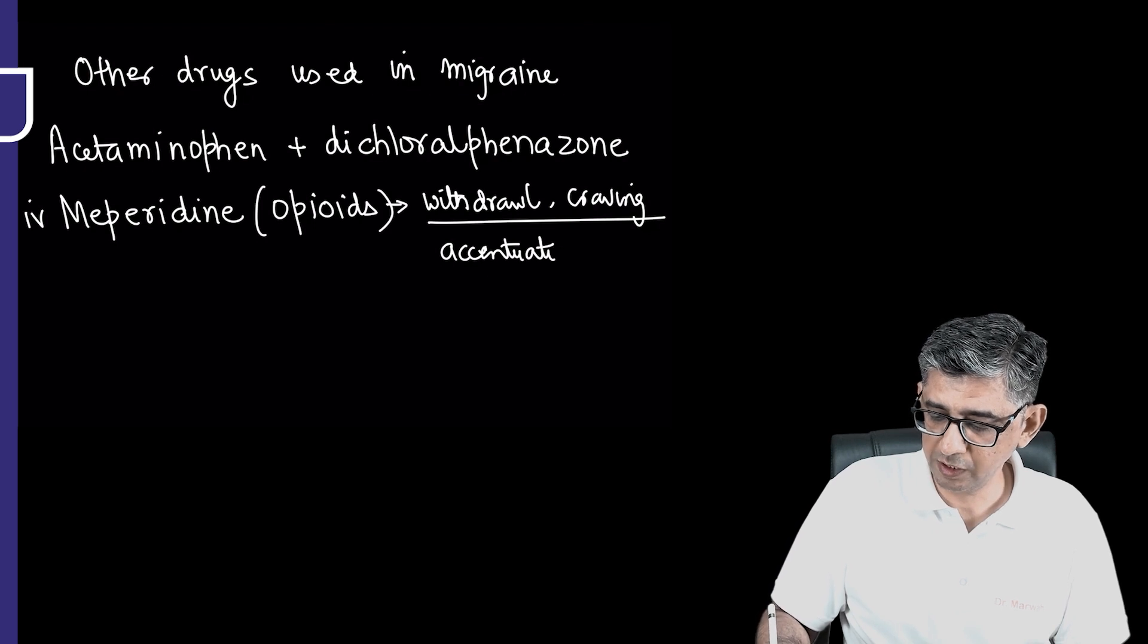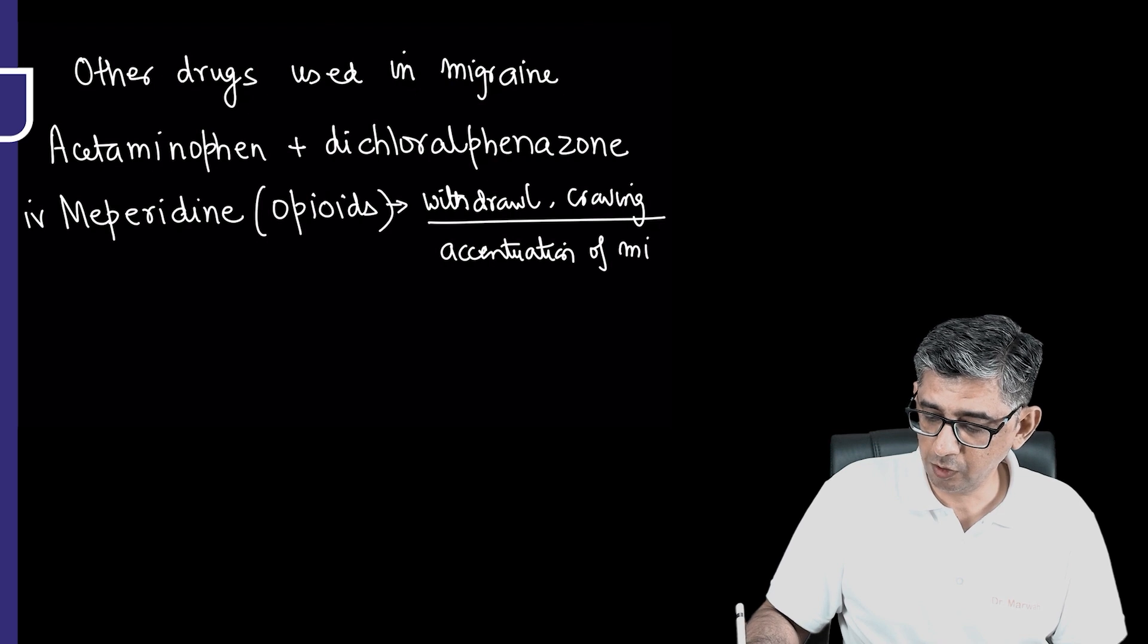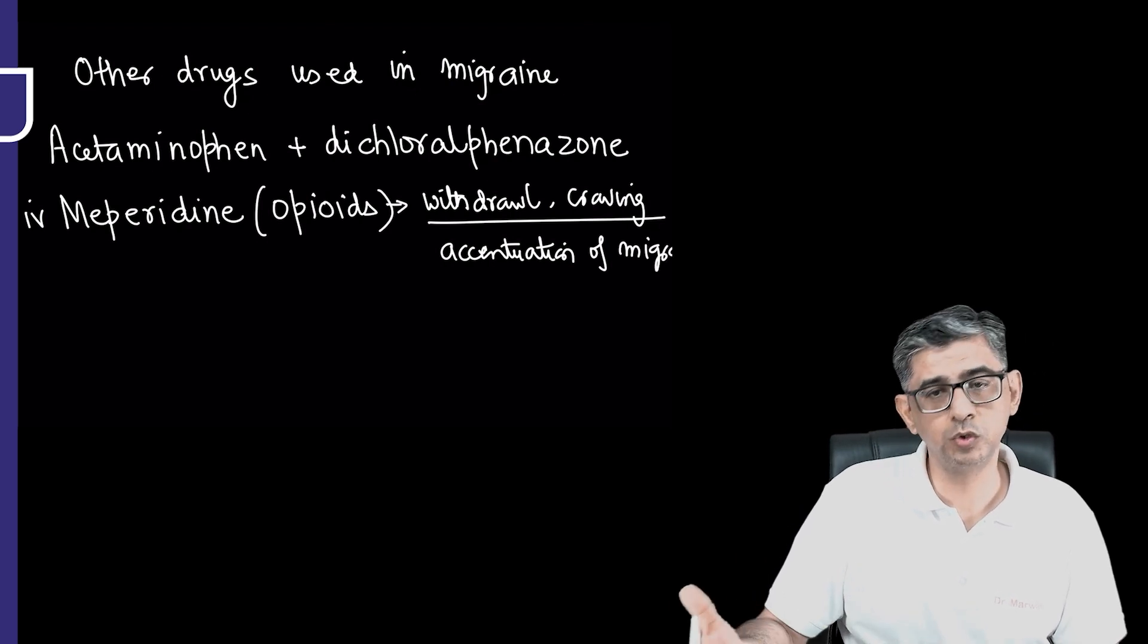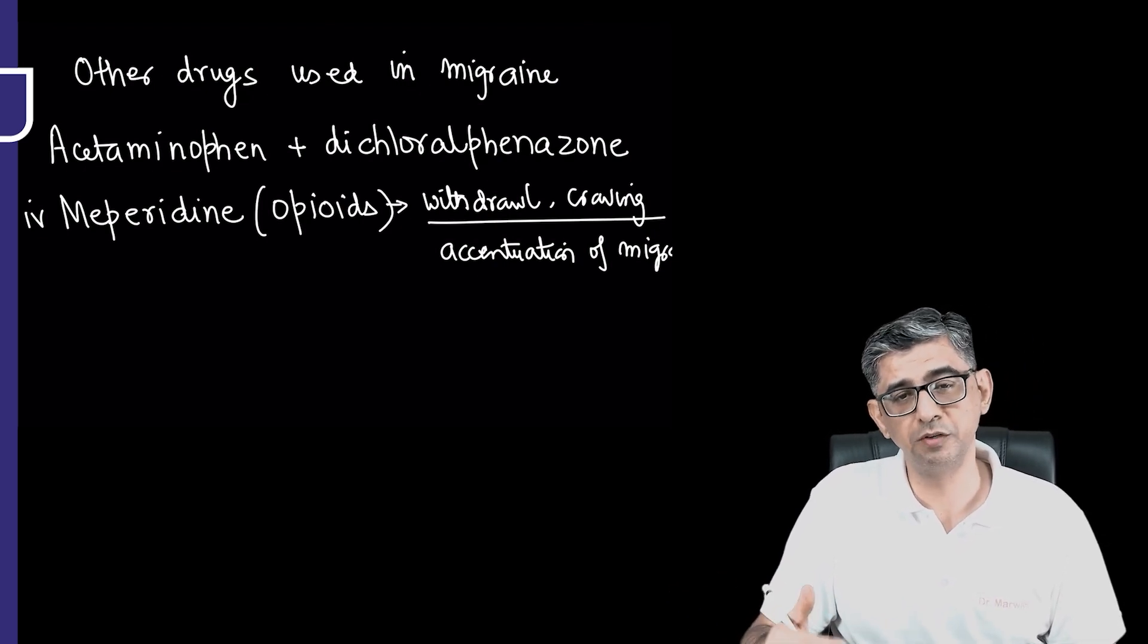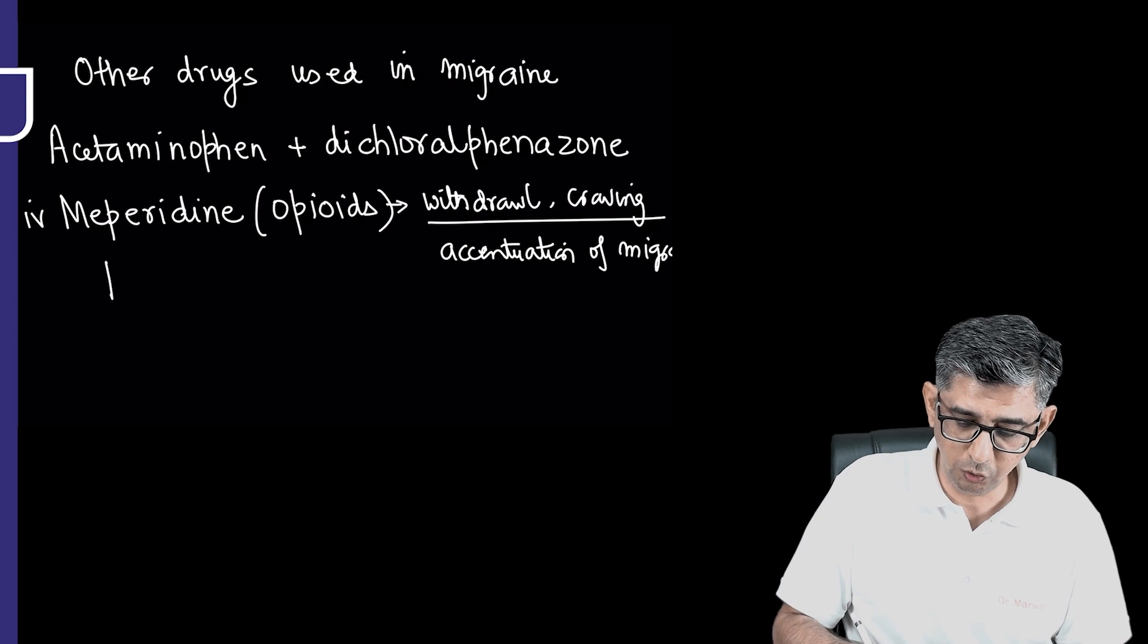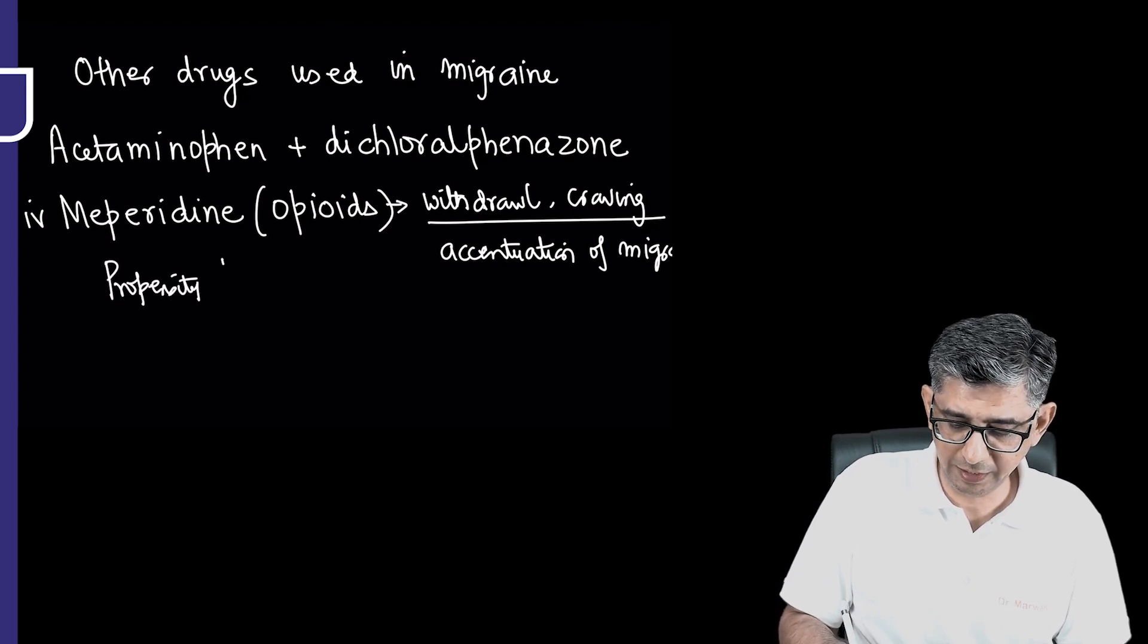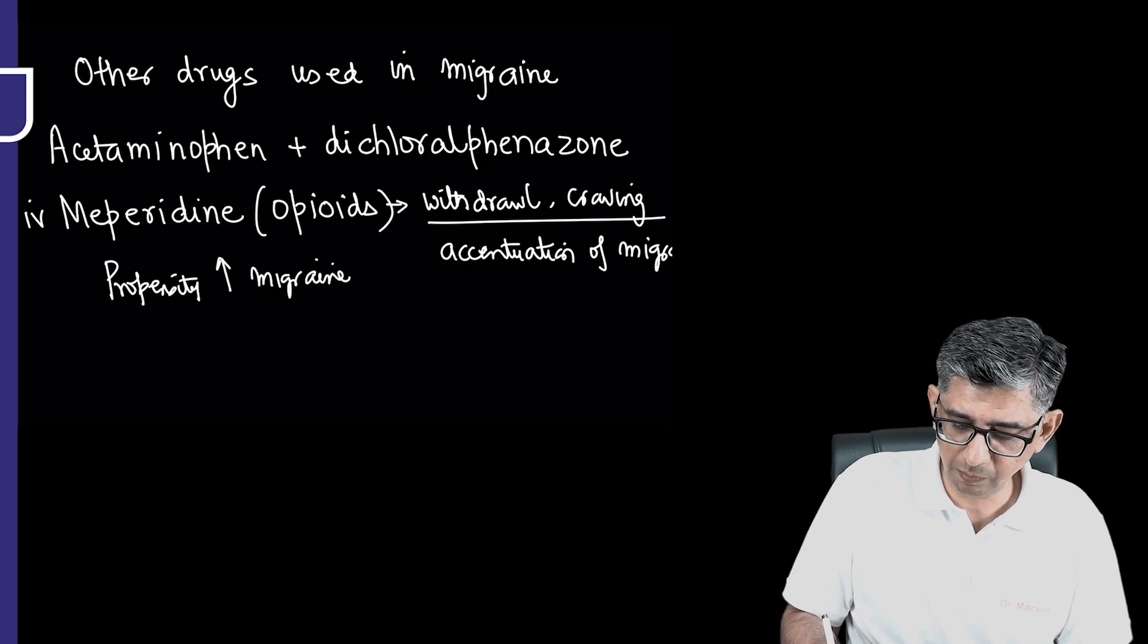If this particular patient was addicted to opioids, they're not available, he's having a withdrawal, and during withdrawal if he develops migraine, it would be even more severe than what it actually is supposed to be. Therefore, we usually avoid writing opioids to patients who are suffering from migraine because your simple answer would be there is an increased propensity or increased chances to increase the severity as well as the frequency of migraine attacks in a patient.